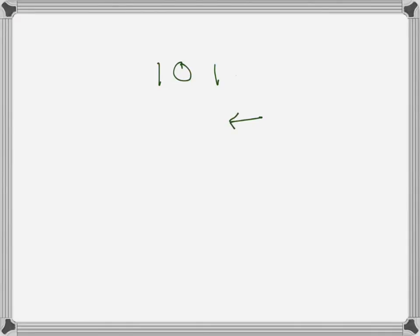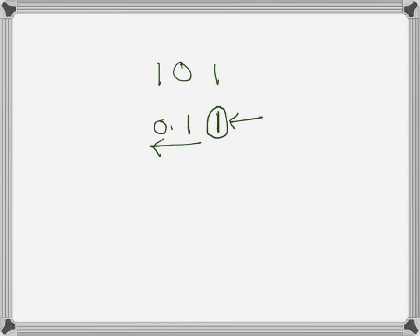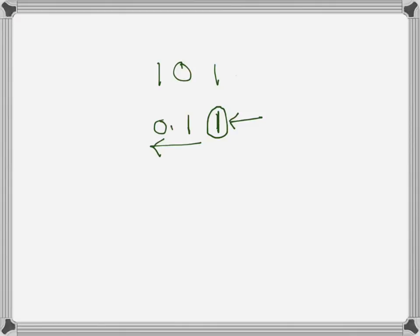There is actually a quicker way to find two's complement directly. Looking at the number 101, what we do is start from the right and move left until we find the first one — we don't change anything up to and including that first one. Then we invert the rest. So here we keep the rightmost one and invert the remaining bits. That gives us the two's complement directly, without needing to find one's complement first and then add one.